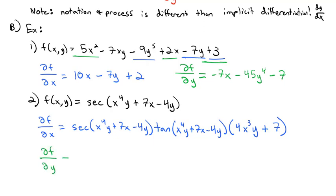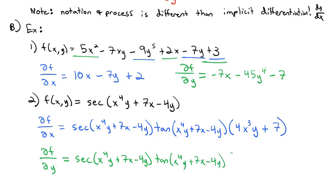For the partial derivative of f with respect to y, it's a very similar chain rule. The derivative of secant is secant times tangent of the stuff, giving us sec(x⁴y + 7x - 4y) · tan(x⁴y + 7x - 4y), times the derivative of the inside with respect to y. For x⁴y, the derivative of y is 1, so we're left with x⁴. The 7x has no y's, so that goes to 0. The derivative of -4y is -4.